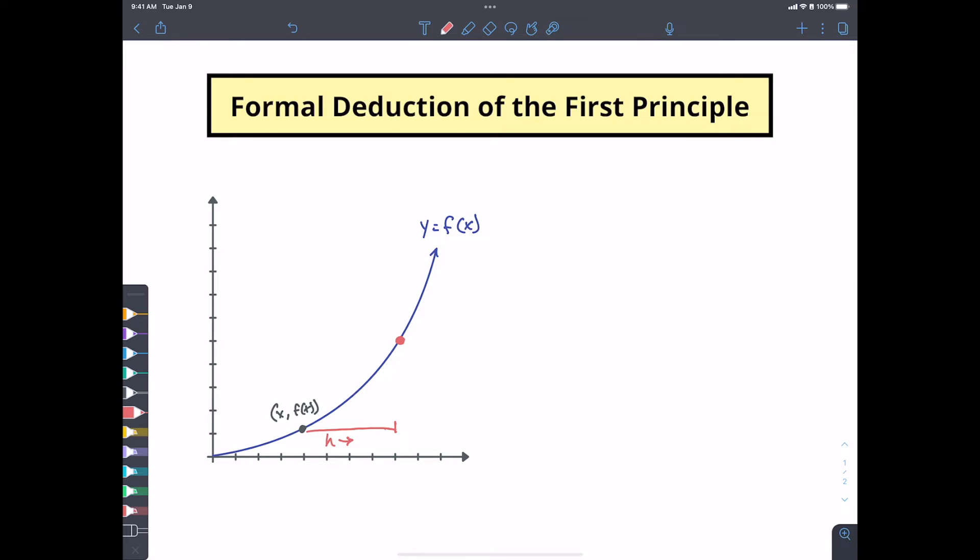And Newton called this distance h but he wanted that distance h to get as close as possible to zero. Now this guy Leibniz, he used the term dx and he wanted that to approach zero. So that's why you sometimes see h used, sometimes you'll see the term dx used.